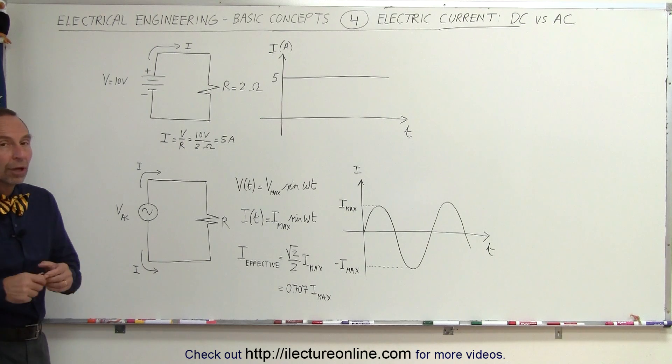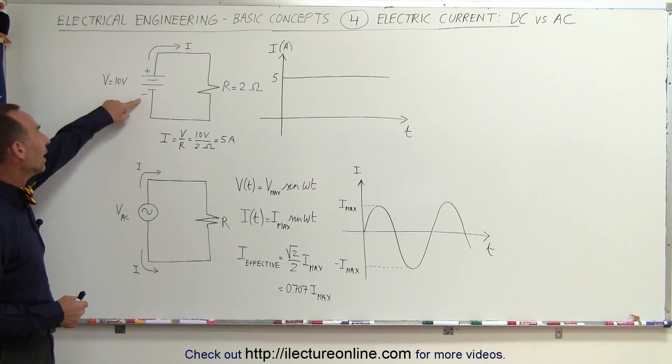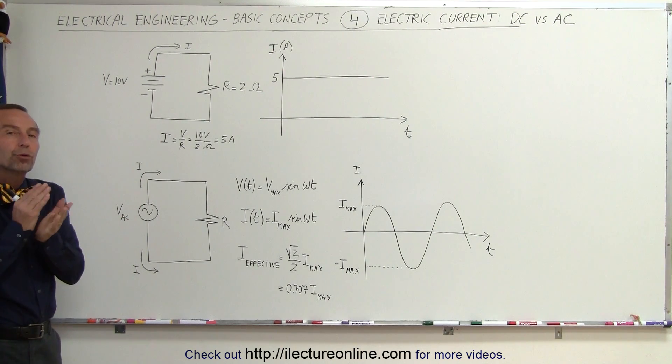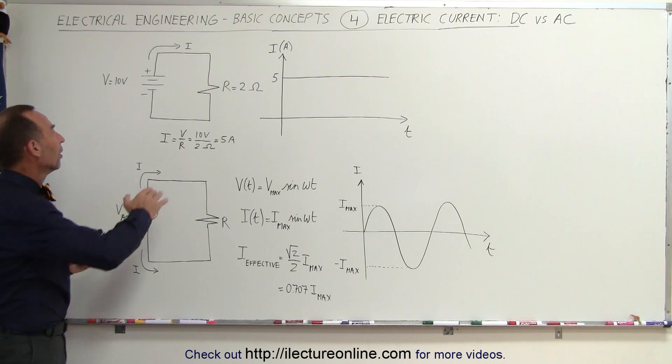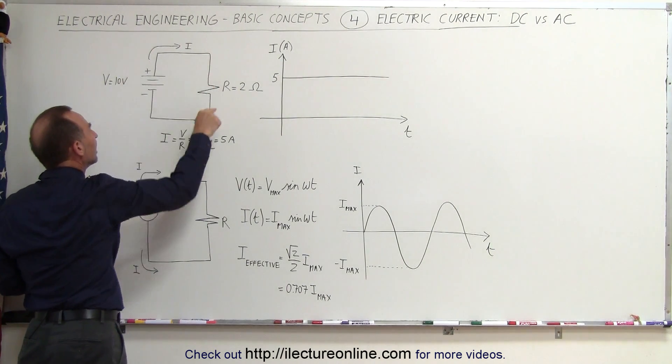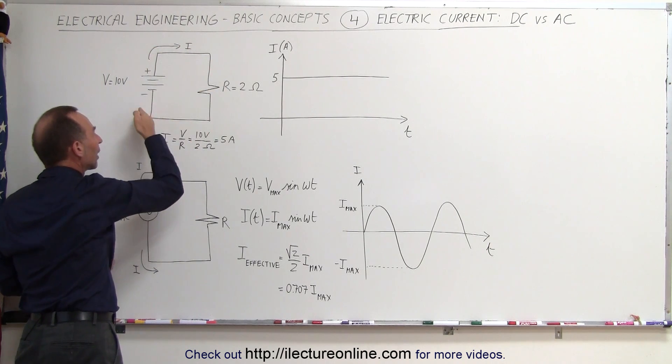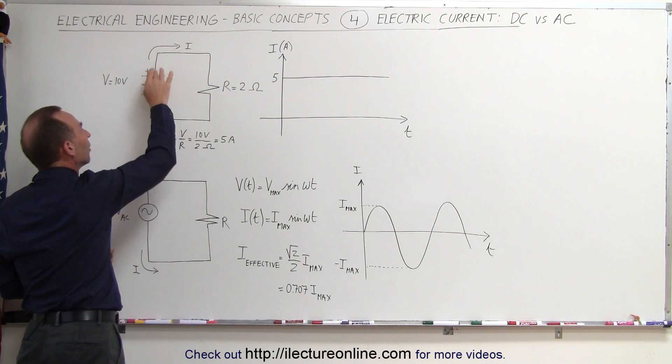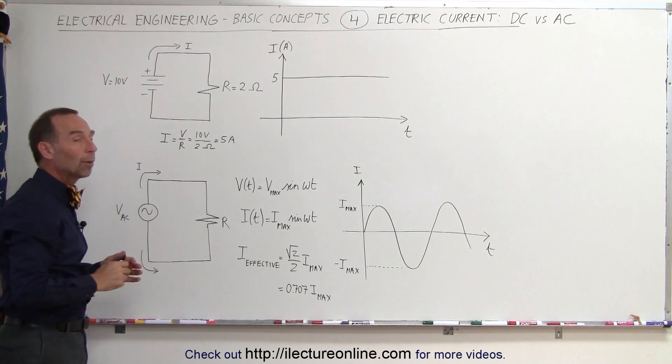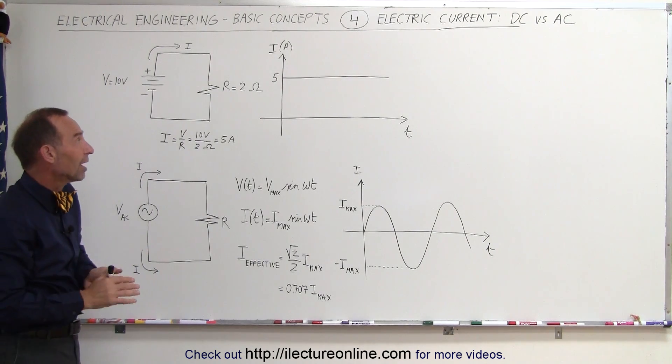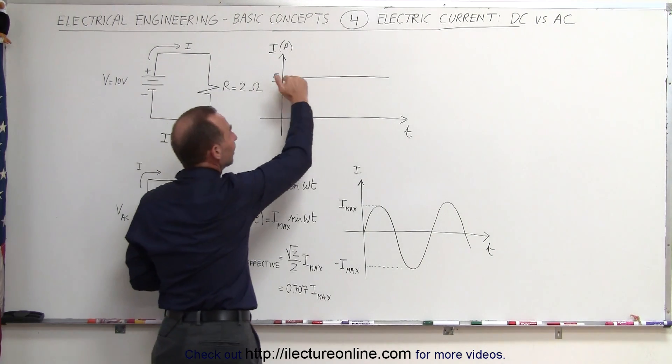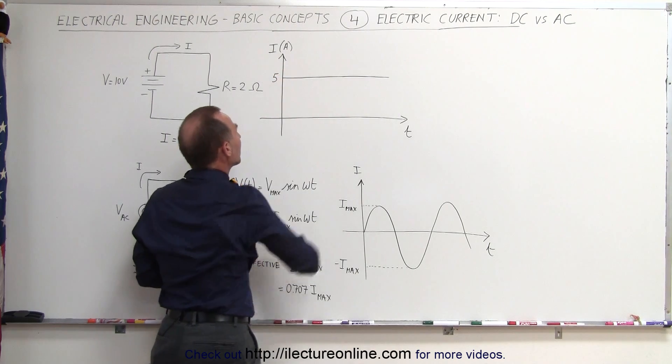When you hear the term direct current, it usually refers to a battery source which can only push current in a single direction, from the positive end towards the negative end around the circuit, and so current always flows in a single direction in that particular path, from positive to negative. When we graph the current as a function of time, you can see it's a steady state current, always the exact same amount of current.